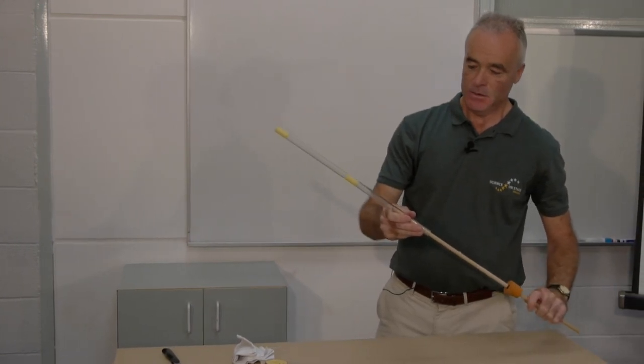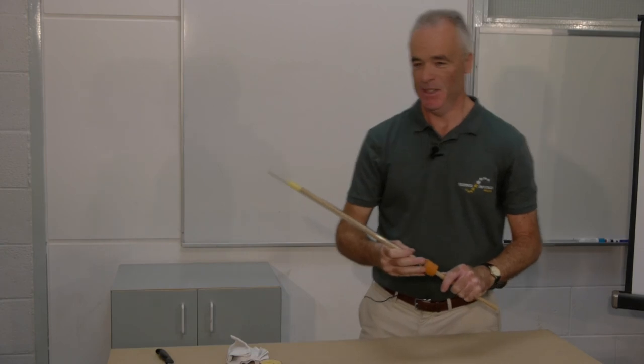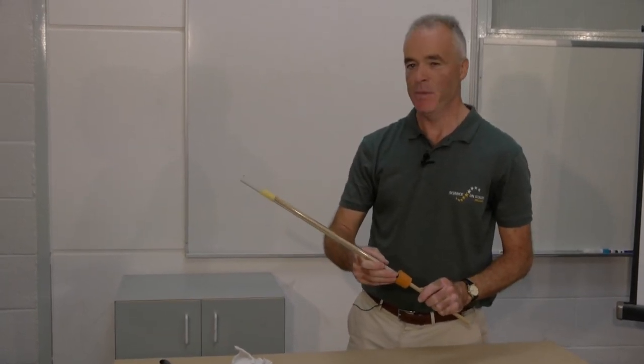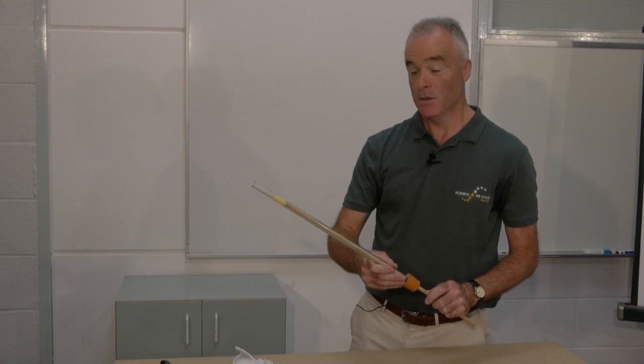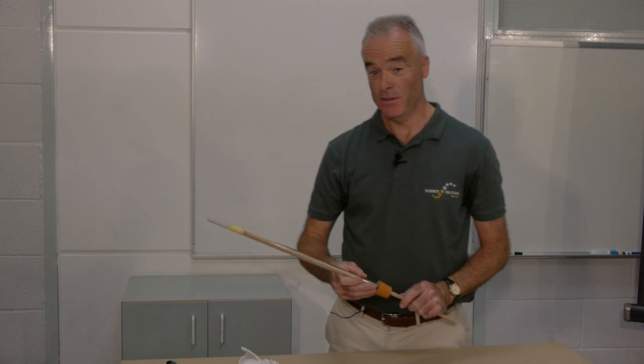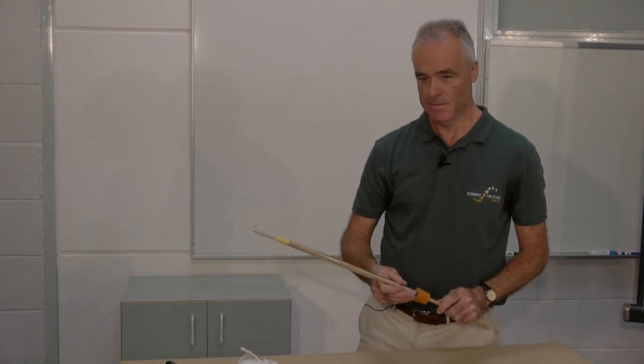If we observe closely, we see that the upper wedge is dislodged with an impressive pop, not unlike a champagne cork being popped. So there is indeed a relationship between the pressure of a gas and the volume that it occupies.